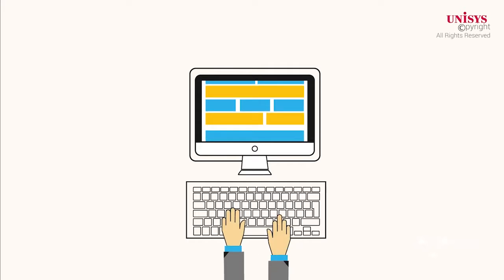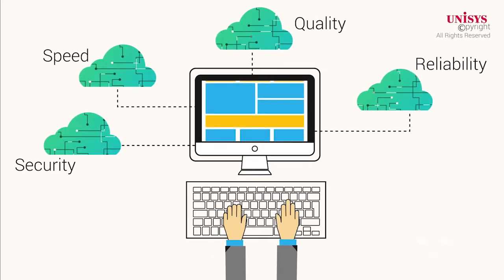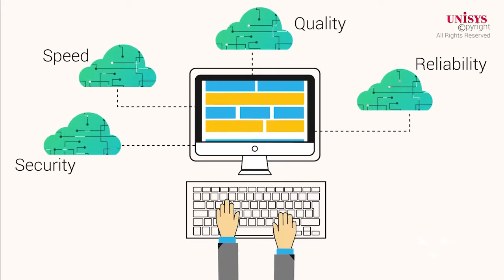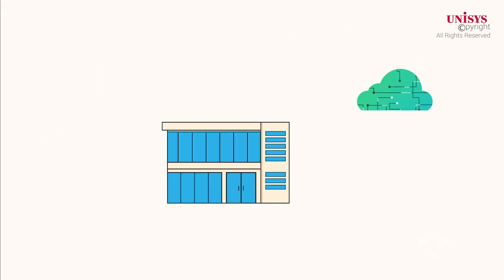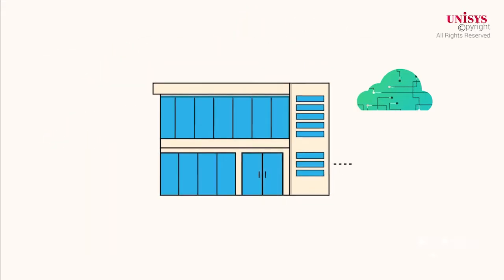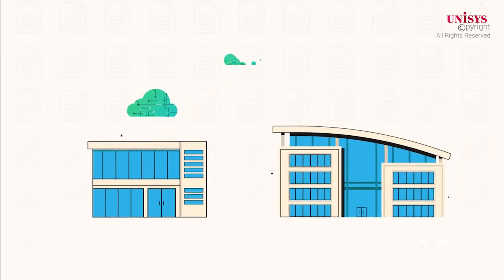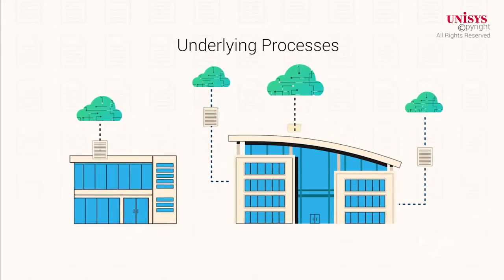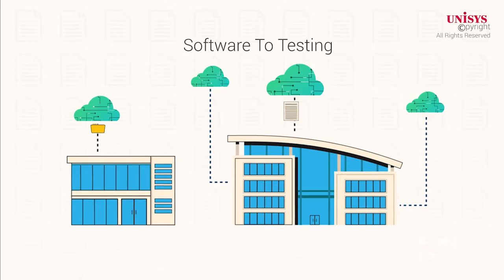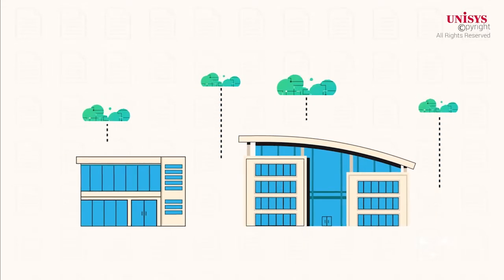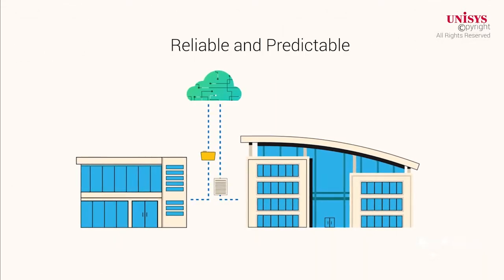Agile and DevOps methodologies are instrumental in increasing the speed, quality, and reliability of software development. While Agile allows developers to develop programs faster, DevOps helps to automate the underlying processes so that we can get the software to testing and production environments faster, in a more reliable and predictable manner.